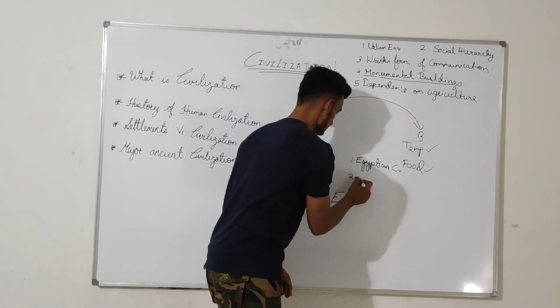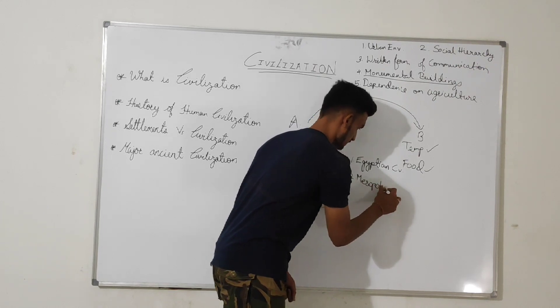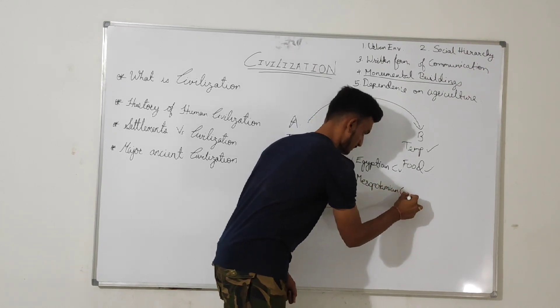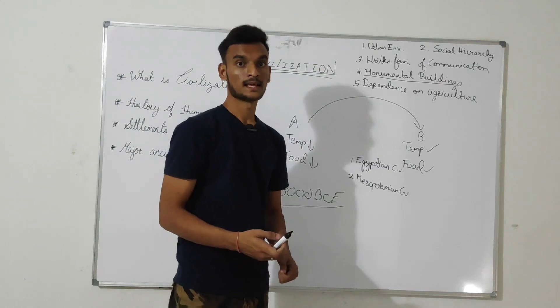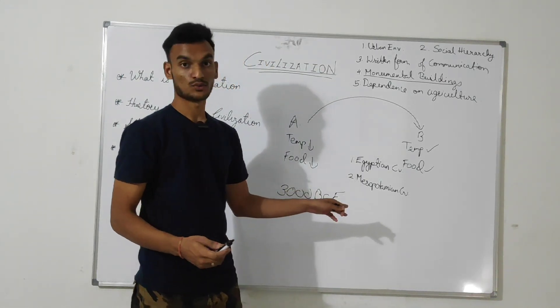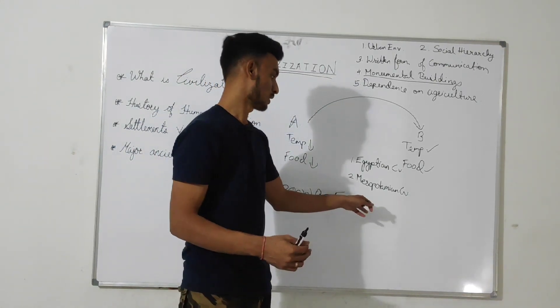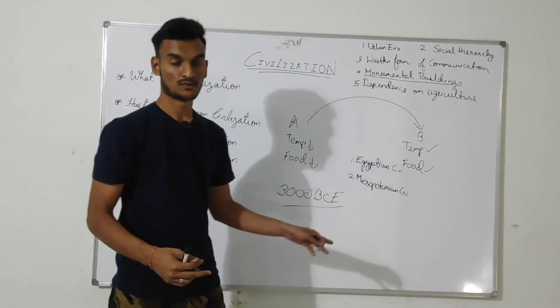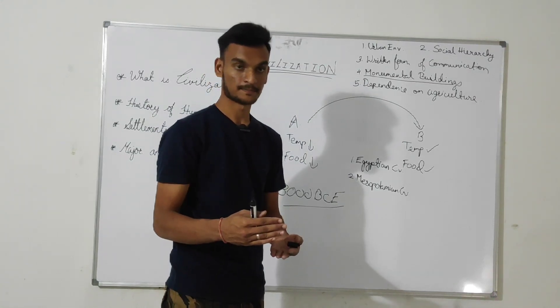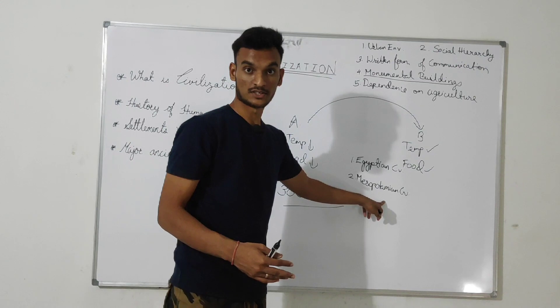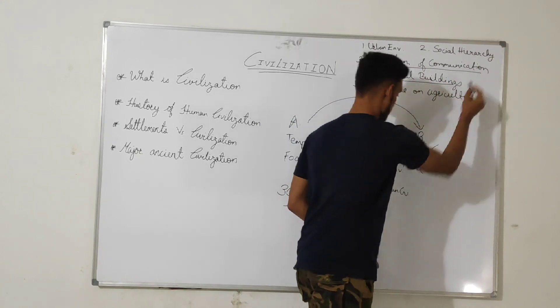Second is Mesopotamian civilization. You might have studied this Mesopotamian civilization in your school days. Mesopotamian civilization was known for its written texts. When the excavation was done in Iraq, Mesopotamia is a region in Iraq, written texts were found. And on the basis of those written texts, information about this civilization was found out. So written form of communication is also evident.